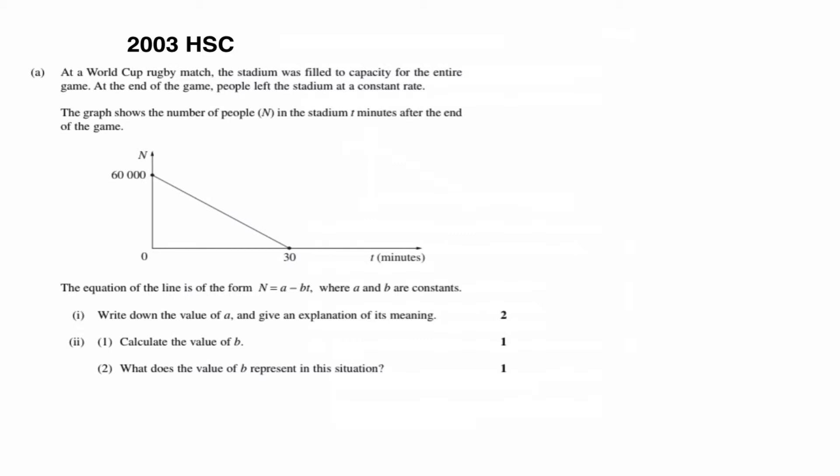Well, if we think about what our general equation of a straight line is, y equals mx plus b, b is the y-intercept. And this expression, or this equation, is actually written in a slightly different form, but a is the y-intercept. So a is 60,000, and that represents the capacity of the stadium. And it represents the capacity because in the initial wording of the question, it told us the stadium was filled to capacity. So two marks there, one for actually finding the value of a, 60,000, and another mark for actually explaining what it means.